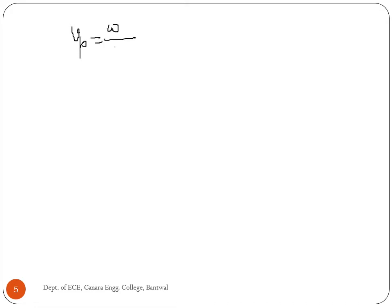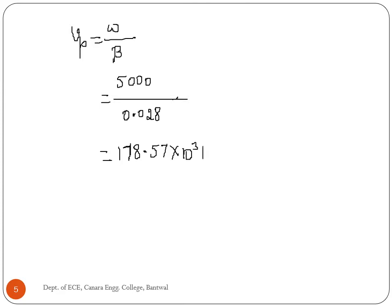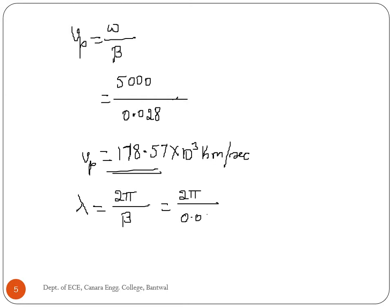Now we find phase velocity. Phase velocity equals omega divided by beta. Omega is 5000 radians per second, beta is 0.028 radians per kilometer, giving 178.57×10³ kilometers per second. Then wavelength lambda equals 2·pi divided by beta: 2·pi divided by 0.028 equals 224.3 kilometers.